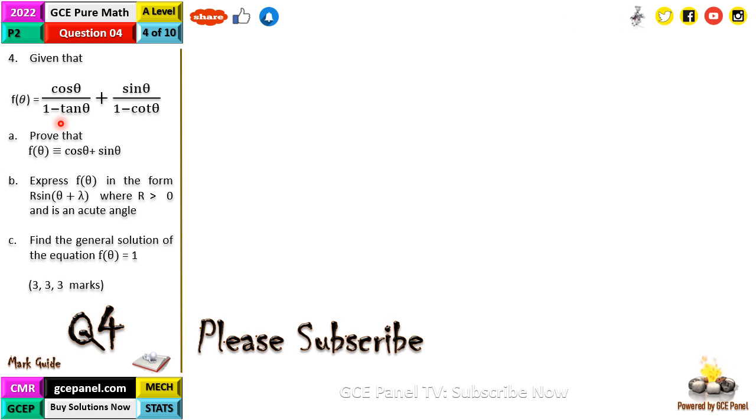So the question reads: Given that cosθ over 1 minus tanθ plus sinθ all over 1 minus cosθ is f(θ), prove that f(θ) is equal to cosθ plus sinθ.